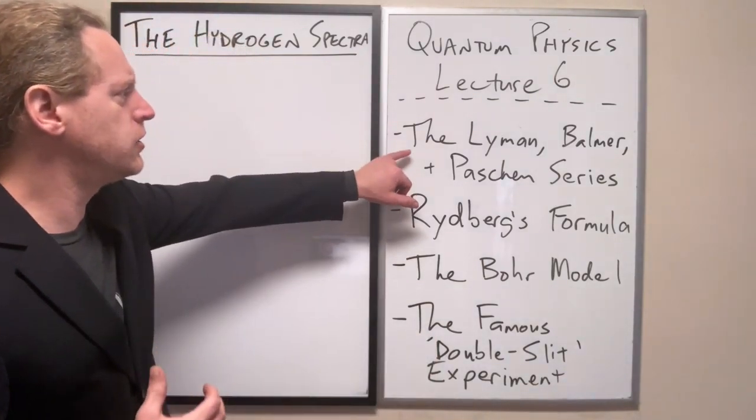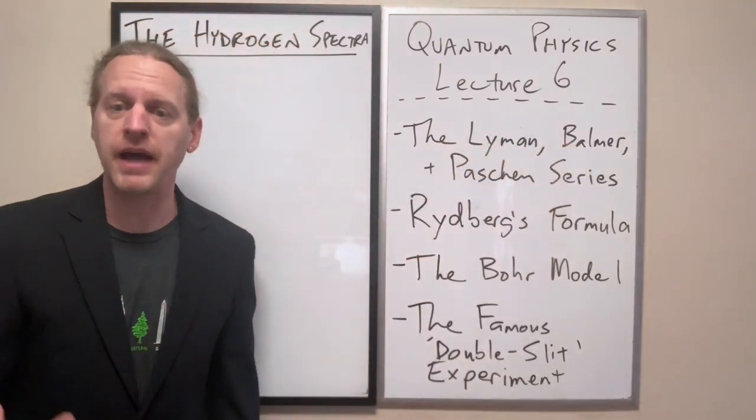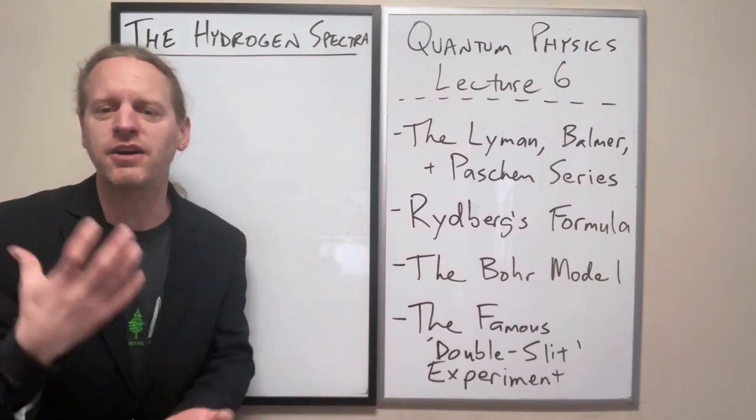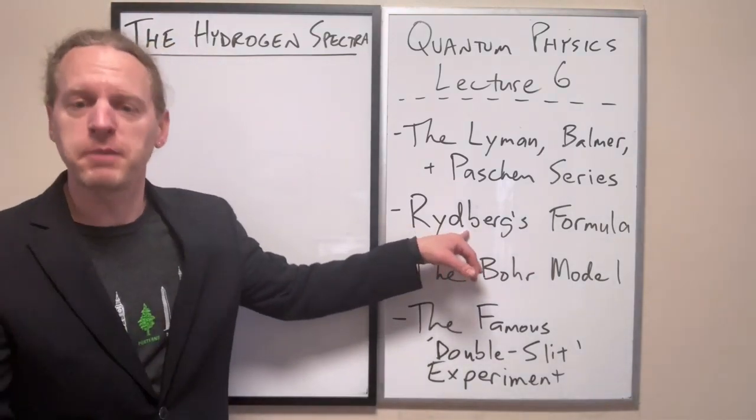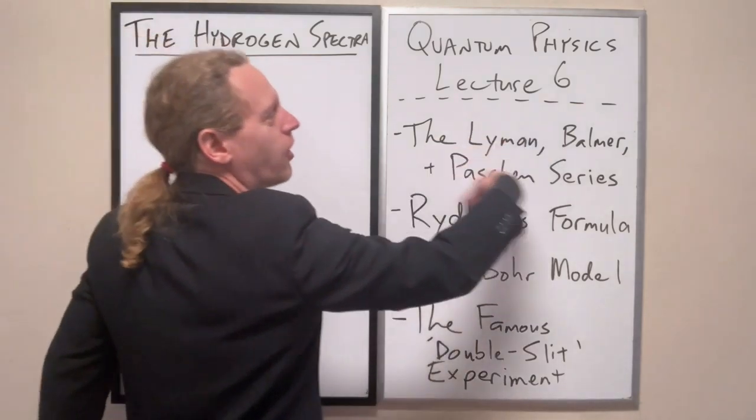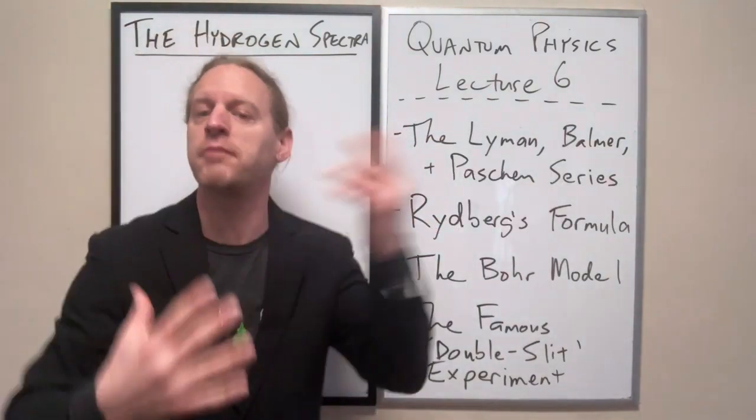I want to go in historical order and talk about what these are, talk about their mathematical insights. Rydberg was the one who said you guys are all doing the same thing. Here's the more cohesive theory of what you're all separately doing.